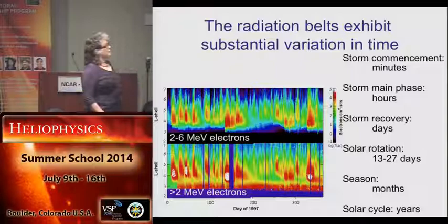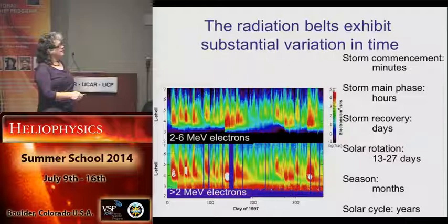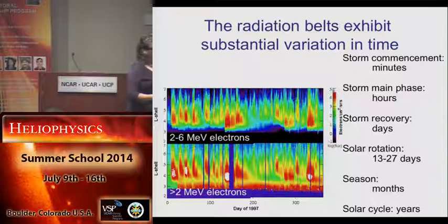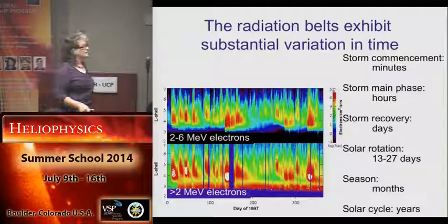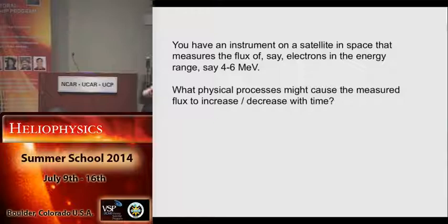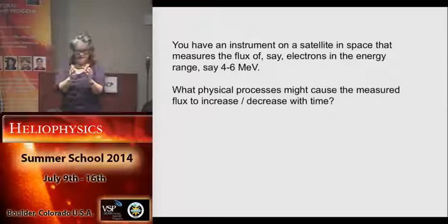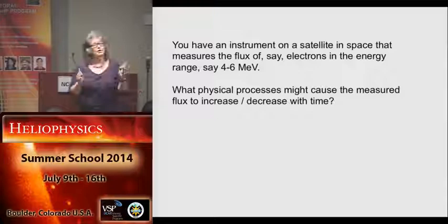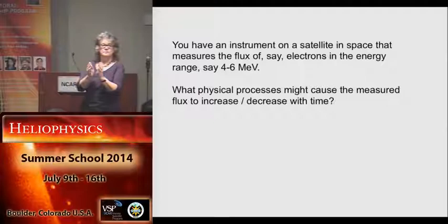When you look at variation as a function of time — here this is L-shell again, limiting the energy range to greater than 2 MeV electrons — you see the outer belt and the inner belt, but they vary with time, coming and going over the days. There's a whole variety of timescales on which things vary, basically associated with perturbations in the magnetosphere. So I have a question: we're sitting on a satellite with a detector that measures particles in a range, say 4 to 6 MeV electrons. What are the physical processes that might cause the measured flux to change?